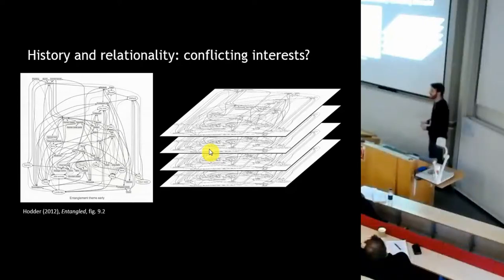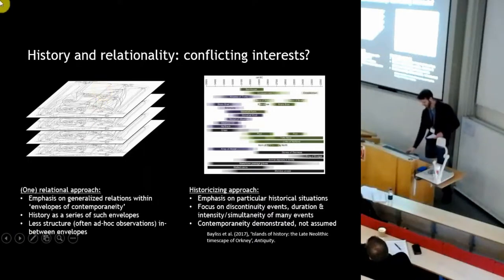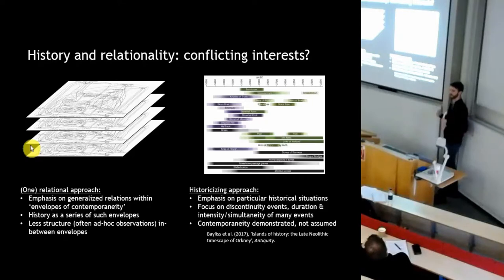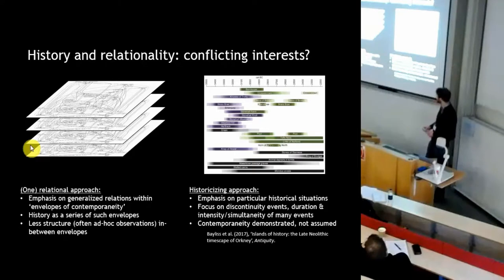Our history ends up looking a bit like a lasagna — great detail and structure horizontally within envelopes of contemporaneity, but the vertical structure, the interstices, are really quite mushy. As Alistair, Alex, and colleagues have set out in recent papers, we can see a difference between this relational approach and a historicizing approach: one focused on generalizable relations within assumed envelopes of contemporaneity, and one that specifically demonstrates contemporaneity through Bayesian chronology and emphasizes very particular, non-repeatable historical situations.